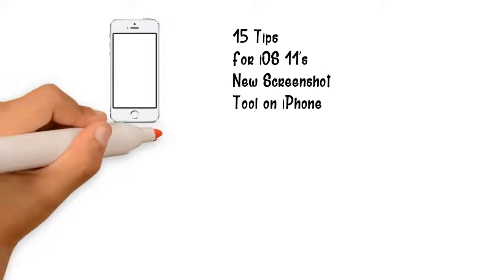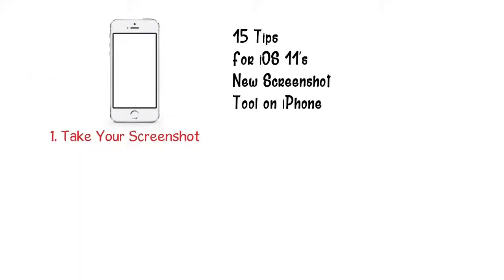Taking a screenshot hasn't changed at all in iOS 11 — it still works the exact same way as it did years ago. Just hold down the sleep or wake button and the home button at the same time on your iPhone. The only difference now is that when you take that screenshot, you'll see a thumbnail in the bottom left of your screen that sticks around for about 5 seconds and disappears if you don't interact with it. If you want to get rid of it even quicker, just slide it over to the left.